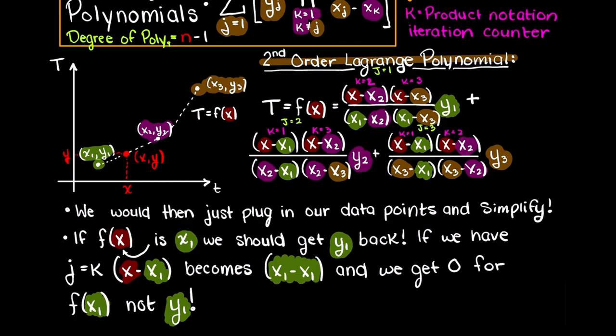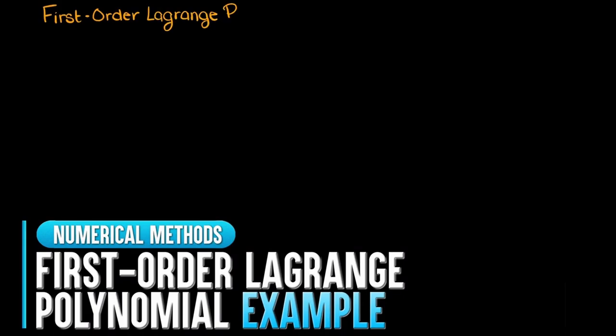The cool thing with Lagrange polynomials is that up until this part of the problem will be the same if you are interpolating for any problem with 3 data points. Then you would just plug in your discrete data points for all the variables and simplify the function. In the coming videos we will complete several Lagrange interpolation examples, so stay tuned if you are still confused.